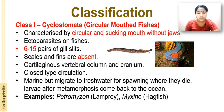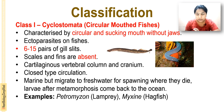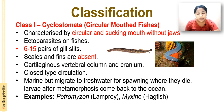Cyclostomata contain 6 to 15 pairs of gill slits. Scales and fins are absent. They have a cartilaginous vertebral column and cranium, and a closed type of circulation. They are marine but migrate to fresh water for spawning, where they die. The larvae after metamorphosis come back to the ocean.